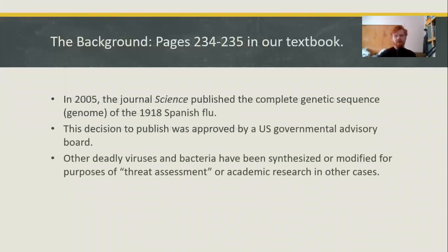What's the background here? This is on pages 234 and 235 of our textbook. In 2005, the journal Science published the complete genetic sequence — the genome — of the 1918 Spanish flu. Previous to that, a researcher actually went and dug up frozen bodies of people who had died of Spanish flu. This was the end of a long piece of research that took decades, and the decision to publish was approved by a U.S. governmental advisory board.